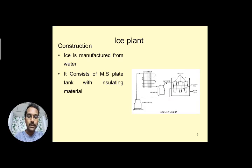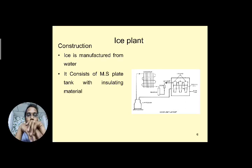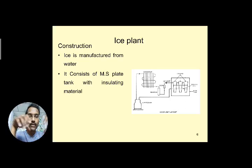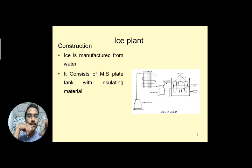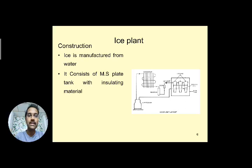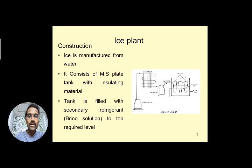The construction mostly requires fresh or pure water to produce ice cubes. The ice cans are made with mild steel plate tanks with insulating material, since water is always in contact with the cans, which must be non-corroded. The tank is filled with the secondary refrigerant — the brine solution — to the required level.